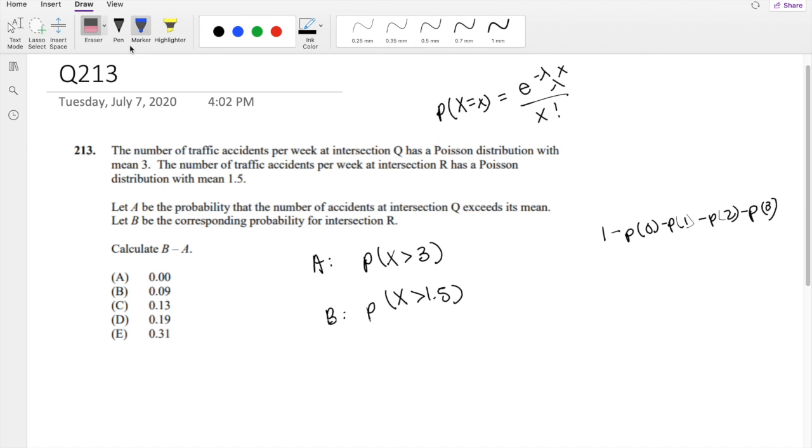For B, we're looking for x is greater than 1.5. Technically, because Poisson's distribution is discrete, we're looking for where it's greater than 2.